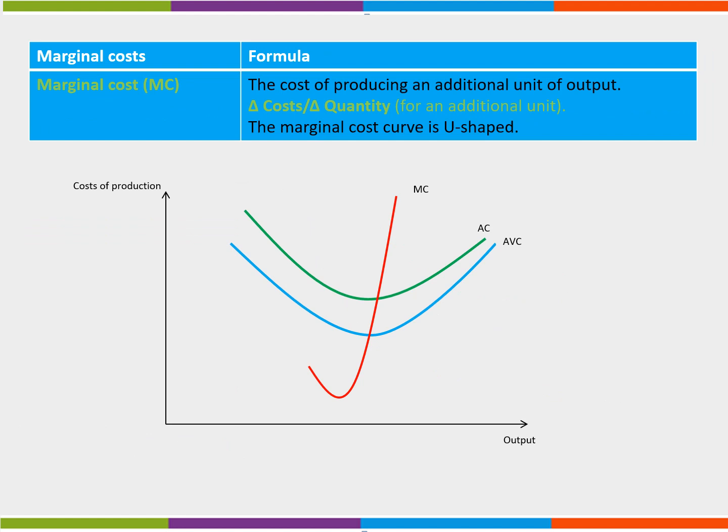Finally, we can bring in the marginal cost, the cost of producing one extra unit of output. The marginal cost is U shaped. At first, as output increases, marginal cost falls.